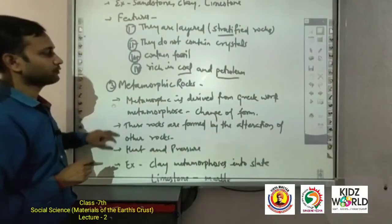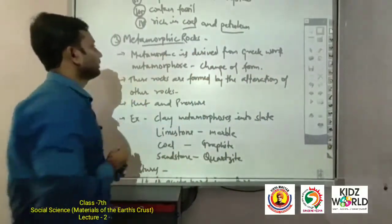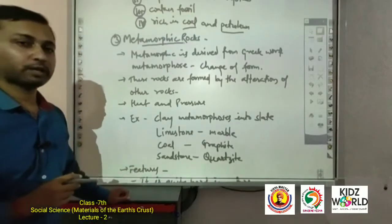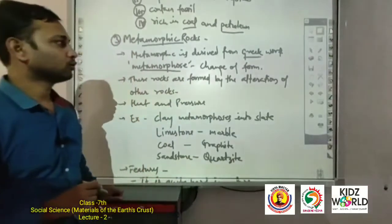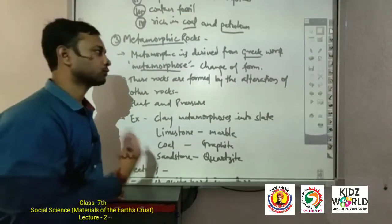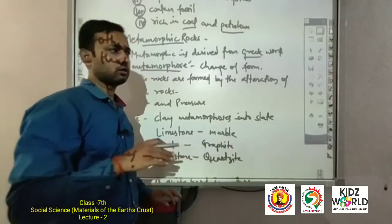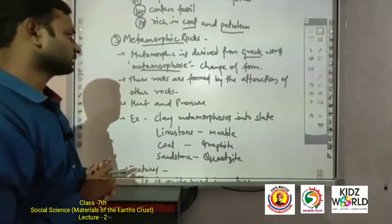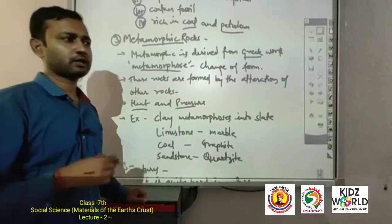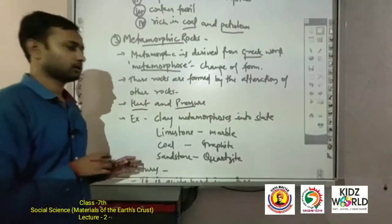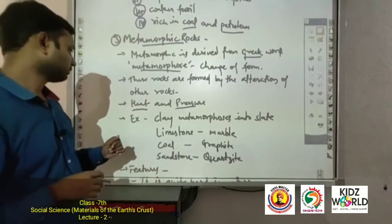The next type of rock is metamorphic rocks, means kaintrit or rupantrit chattan. The word metamorphic is taken from the Greek word 'metamorphose', which means change of form, meaning to change one's appearance. These rocks are formed by the alteration of other rocks due to heat and pressure, atmospheric conditions, or forces of nature.